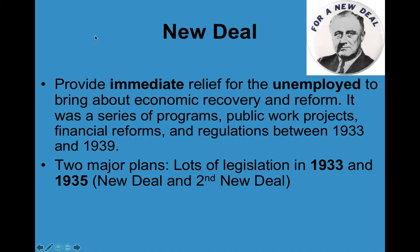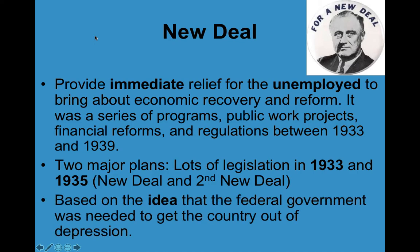There are two major sets of legislation. A lot of new programs were put in place in 1933 right after Roosevelt became president, and then another set happened in 1935 — sometimes called the New Deal and the Second New Deal. All these new programs are based on the idea that the federal government was needed in order to get the country out of the Great Depression.